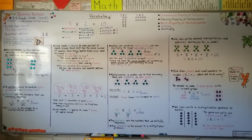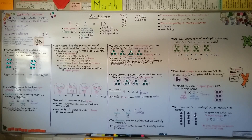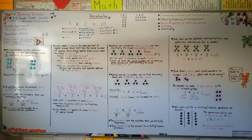Multiplication and addition are alike because we can use both to combine equal groups. We can do repeated addition, or we can multiply how many groups times how many are in each group to get a product. I hope you have a wonderful day and I'll see you next time. Bye!